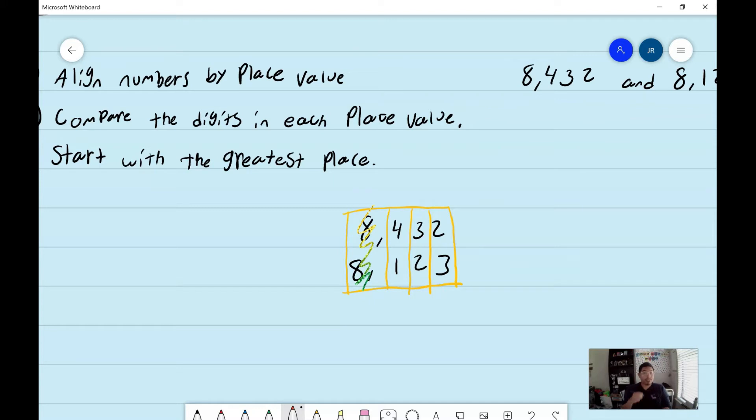Ocho ocho son igual, they're the same, so I don't count that. Ahora tengo cuatro y uno. ¿Cuál es más grande? El cuatro y el uno. El cuatro. Good. Which one's bigger? Four or one? Four. Good. So I'm going to circle it. So now I have my biggest number. So that means this one is my biggest number. Ahora voy a circular el cuatro y significa que ocho mil cuatrocientos treinta dos es más grande que ocho mil cien veintitrés.